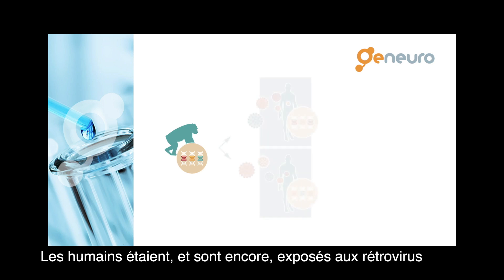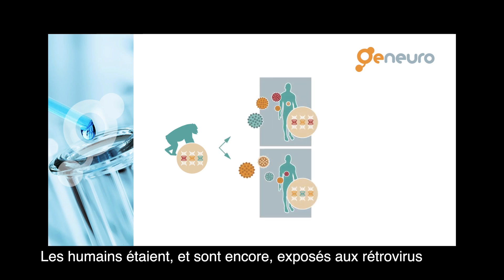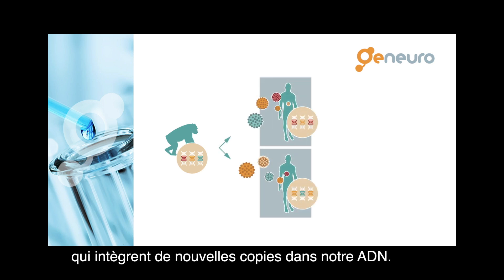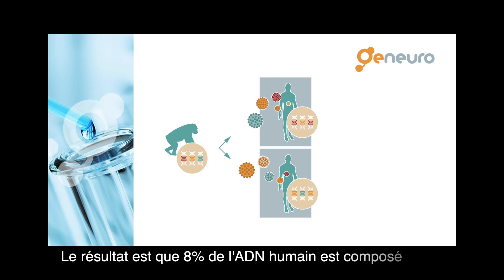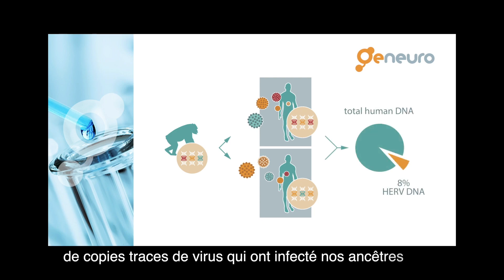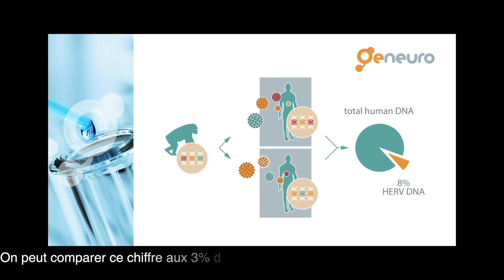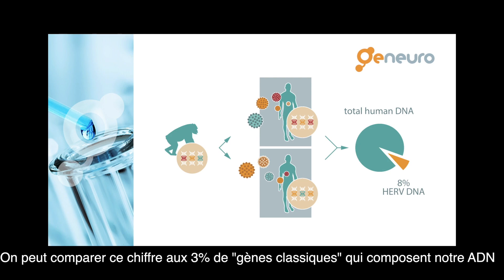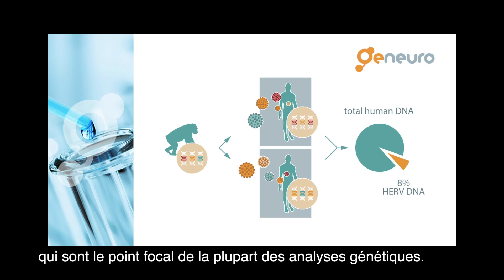Humans were and are still exposed to retroviruses, endogenizing new copies into our DNA, and as a result, 8% of human DNA is composed of remnant copies of viruses that contaminated our ancestors. This compares to about 3% of our DNA made of so-called classical genes, which is the area of focus of most genetic analysis.